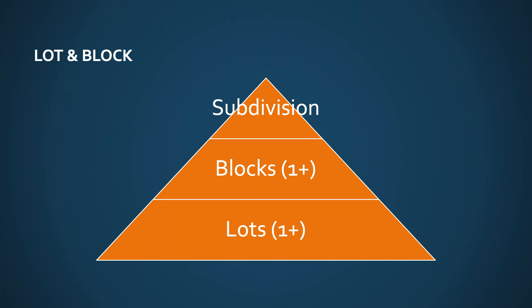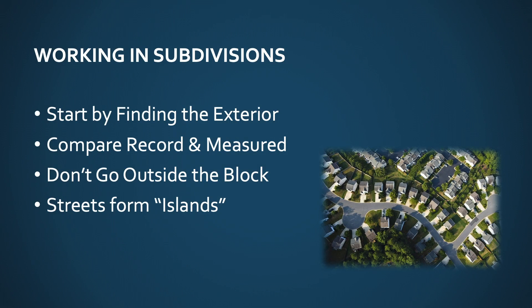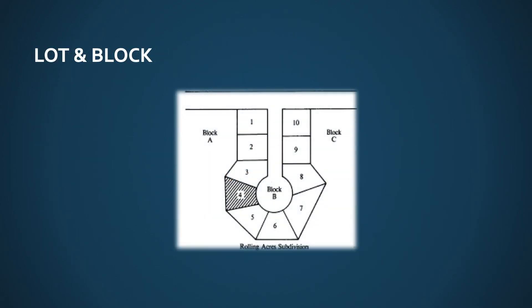Let's look at a graphic version of a subdivision. The subdivision is the biggest piece — that's the whole drawing. Zoom in one layer and you have a block. Blocks are typically separated by roads. In this example, we probably have four blocks because there are four independent sets of lots each separated by a roadway. In subdivisions, we treat roadways like water and blocks like islands, because we never transfer excess or deficiency from one block to another. The smallest unit in a lot and block system is the lot, and lots are individually owned, bought, and sold.